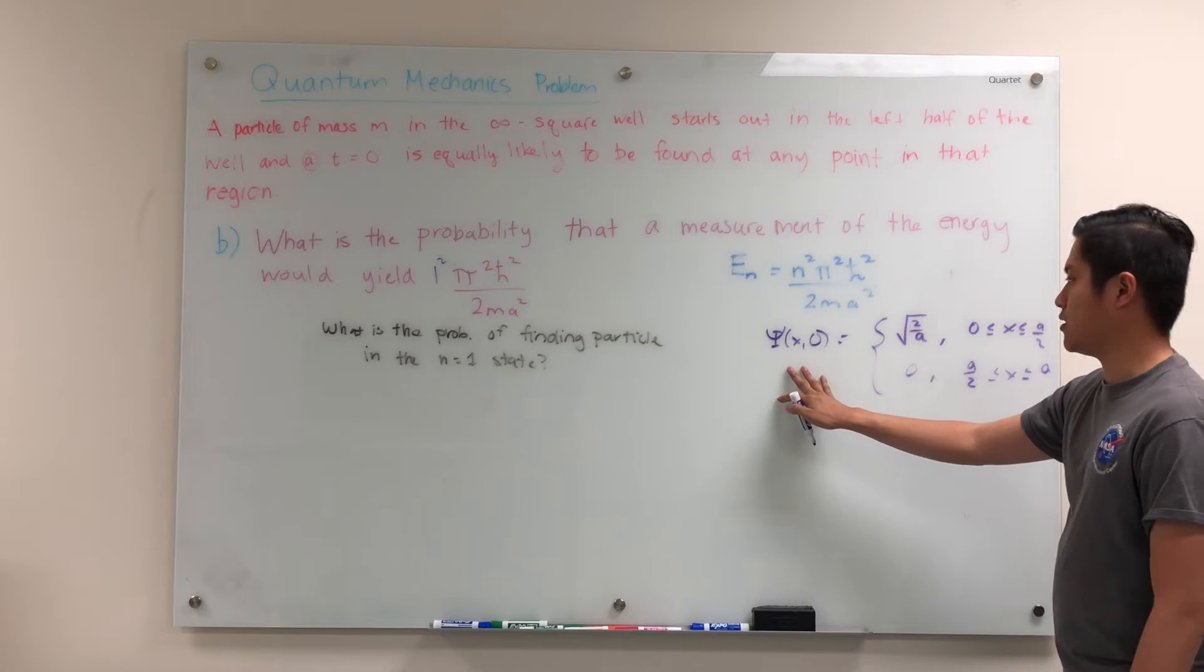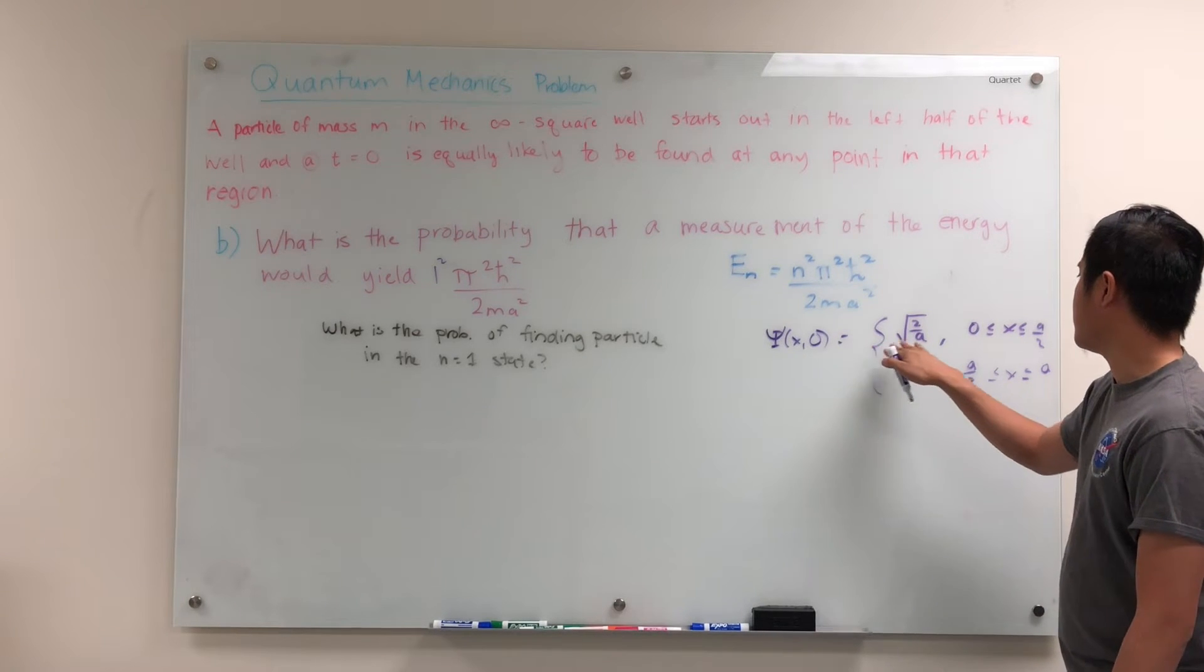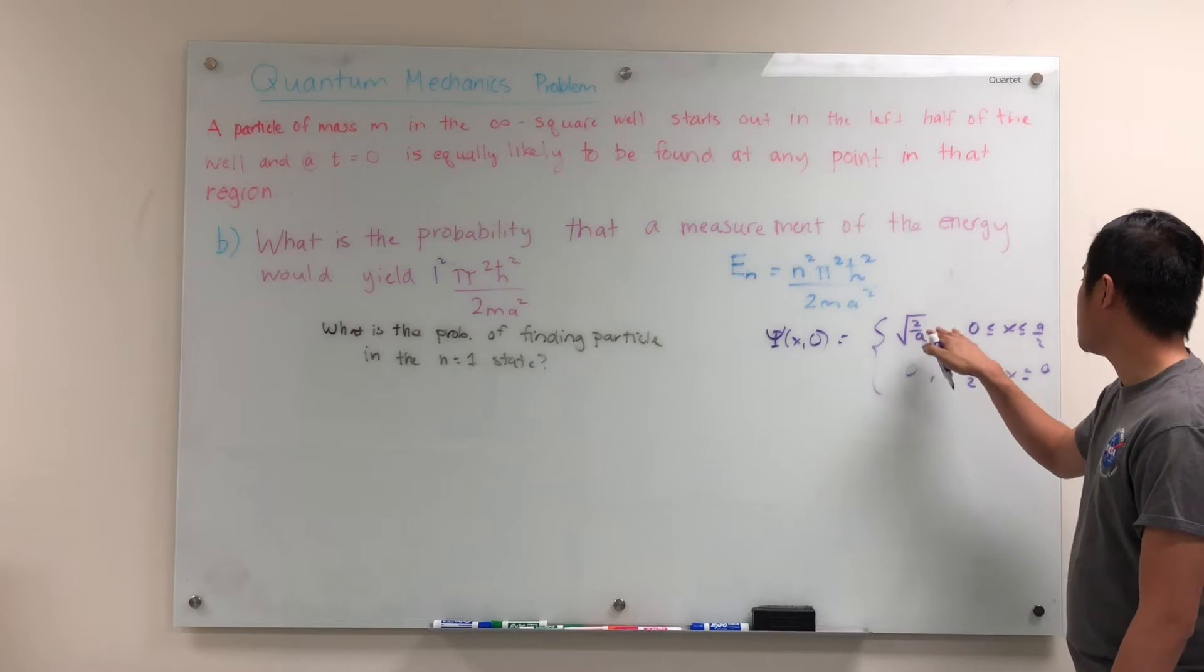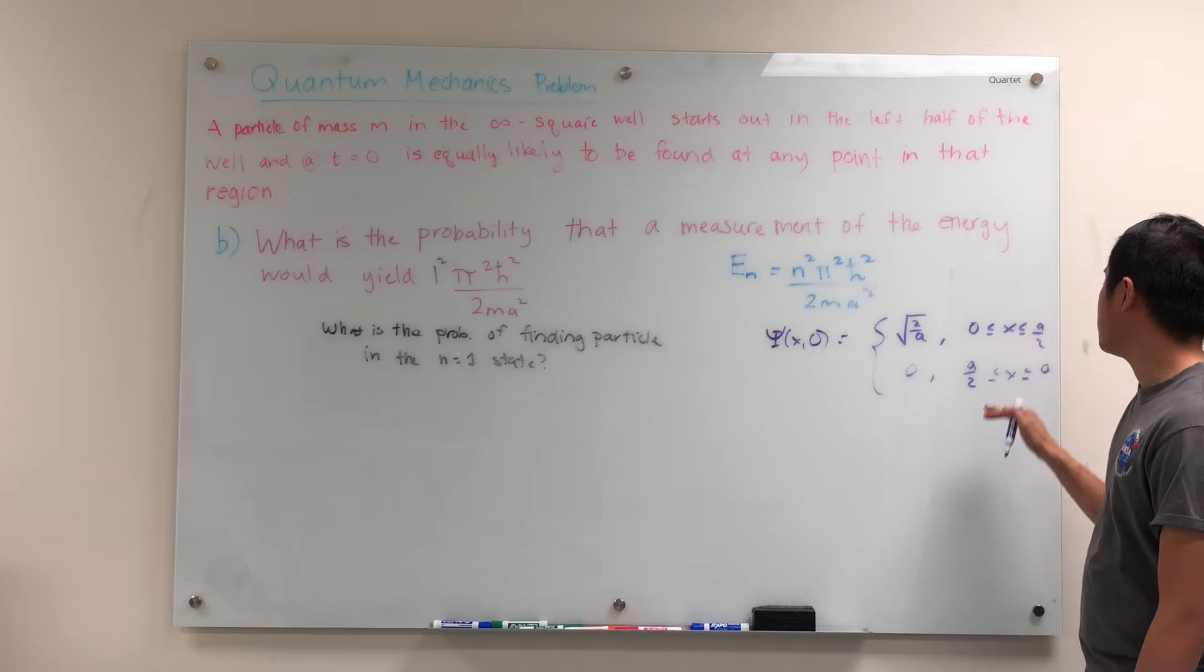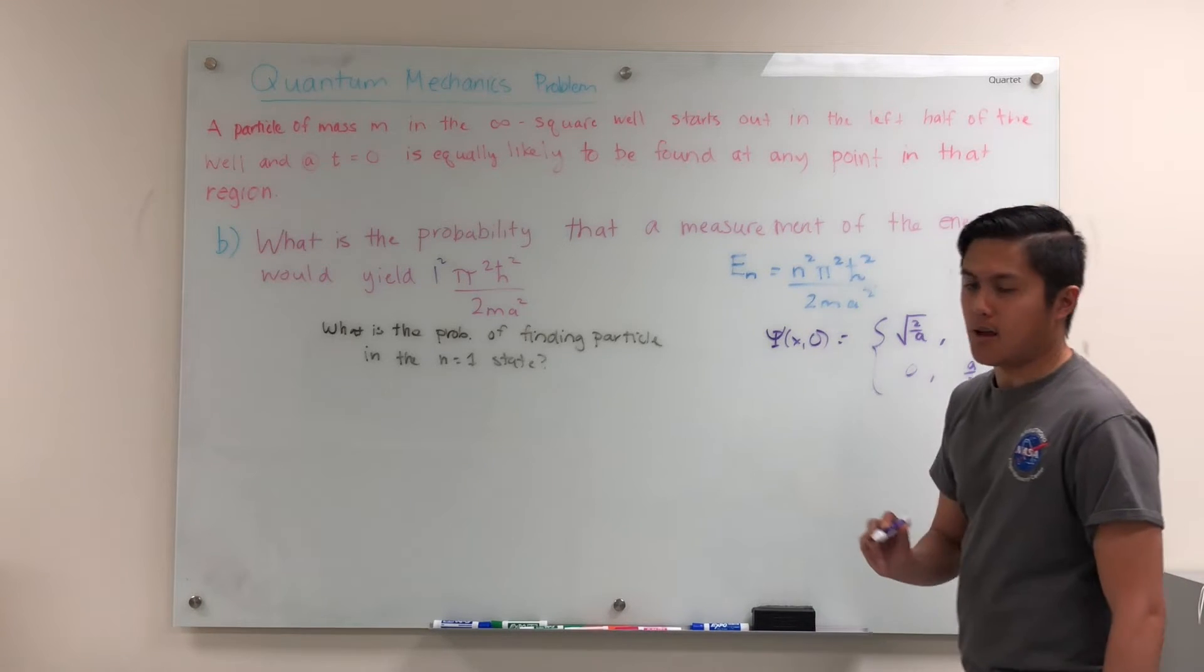Now, remember that the initial wave function was given by, in the previous part, root 2 over a between 0 and a over 2, and 0 between a over 2 and a.